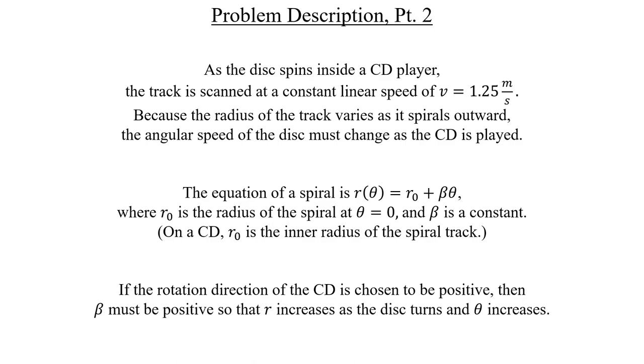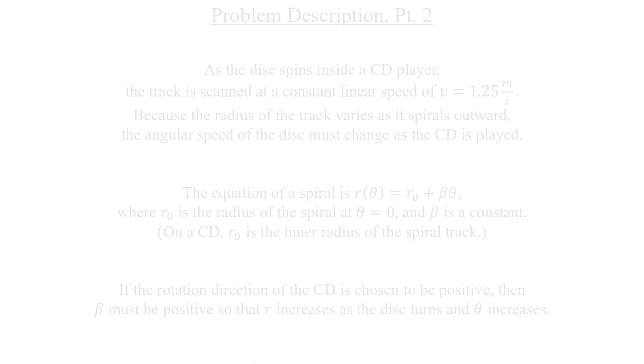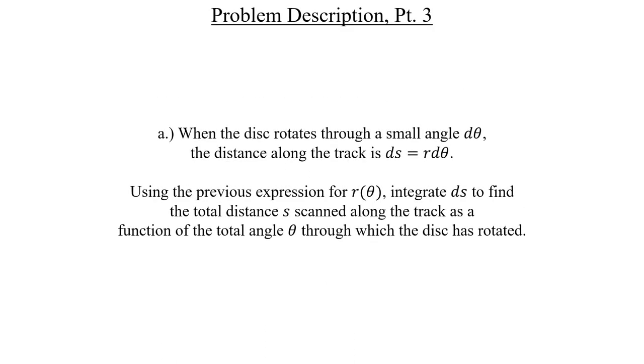Let's take a look at the five different parts that the problem wants us to do. For part A, we're given another equation, and that describes an infinitely small distance along that spiral track. We need to take the previous equation for the radius of the spiral as a function of the angle and use that in conjunction with this new equation.